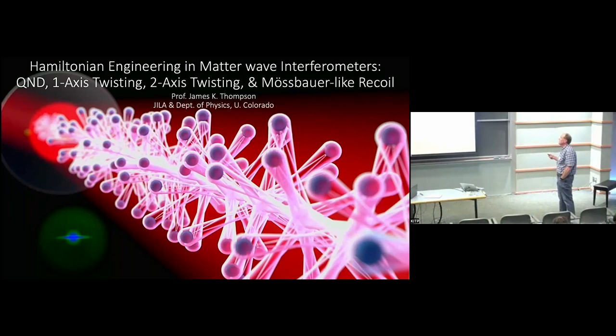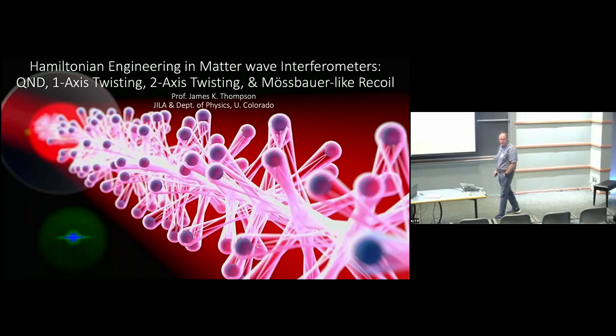I'm going to tell you today about some work where, as the title lists, we're going to talk about Hamiltonian engineering in the context of matter wave interferometers. We'll talk about QND measurements, non-demolition measurements, one-axis twisting, and two-axis twisting in a Mossbauer-like collective recoil mechanism that we've seen in a matter wave interferometer.